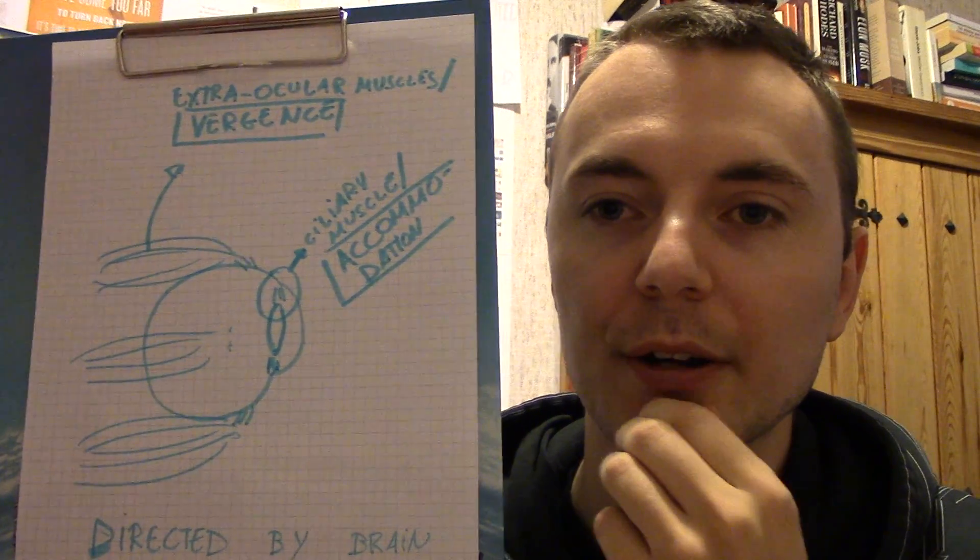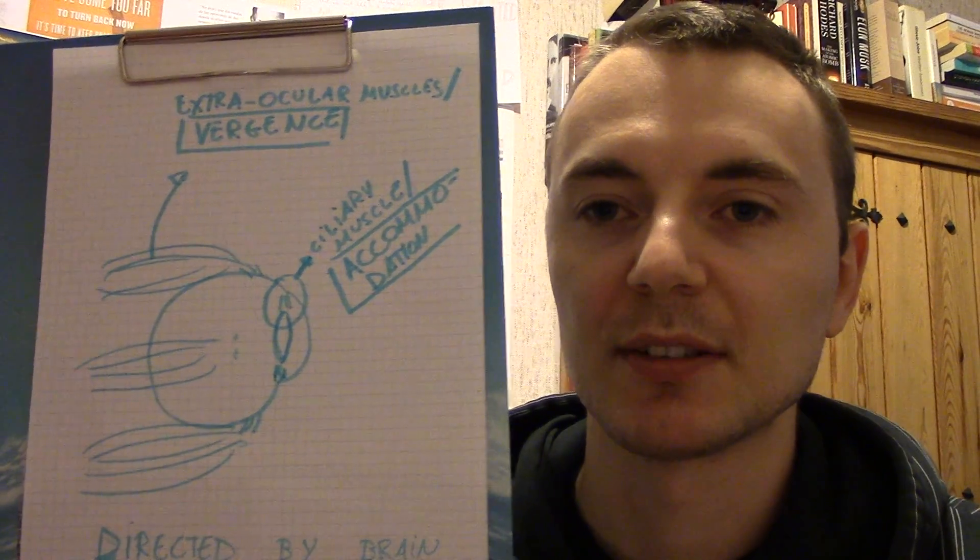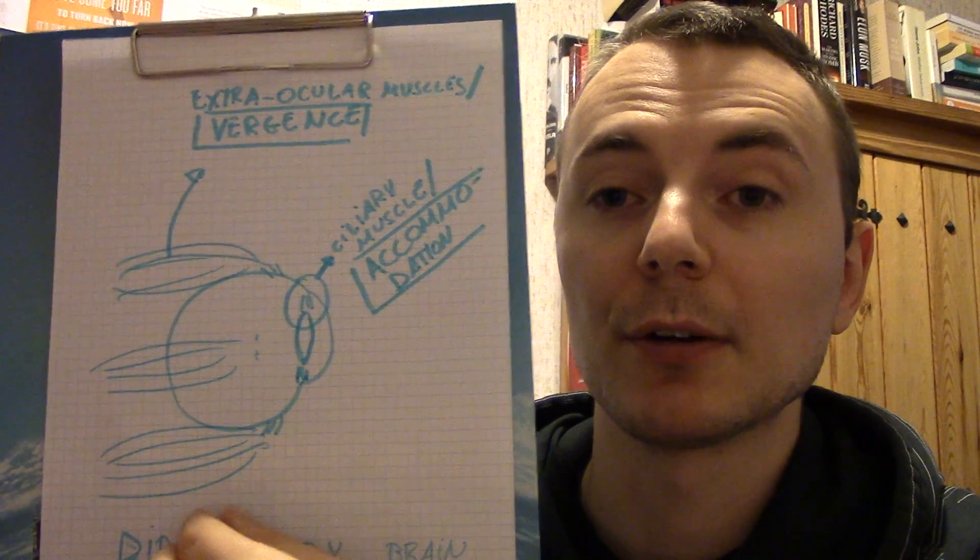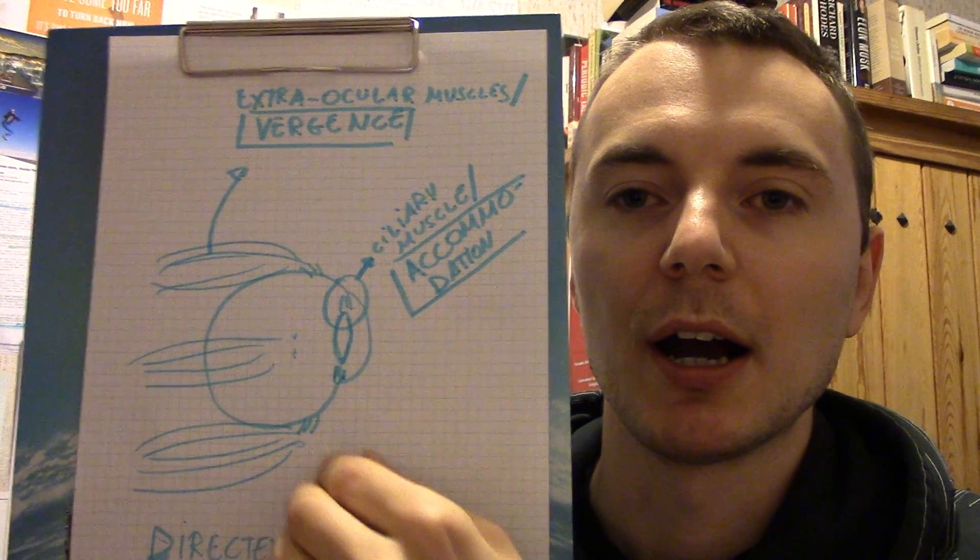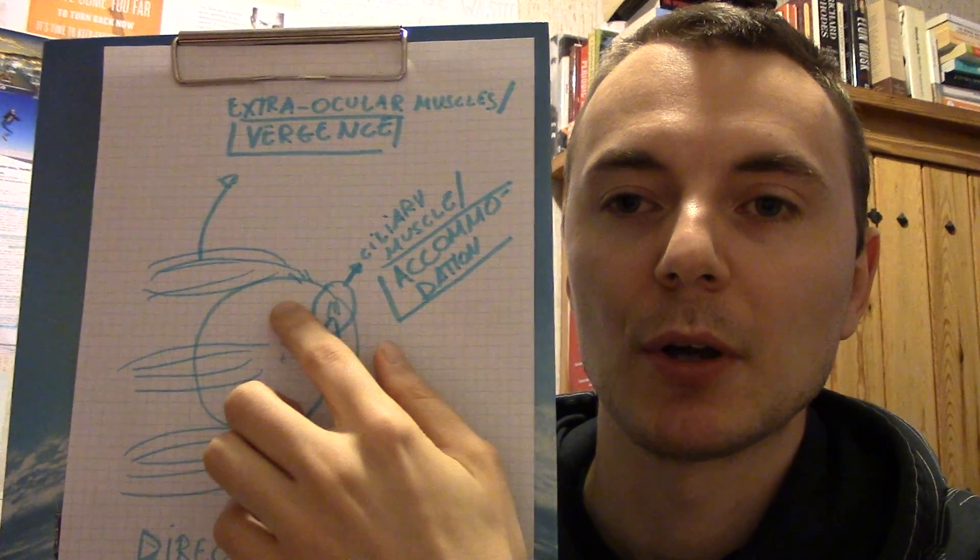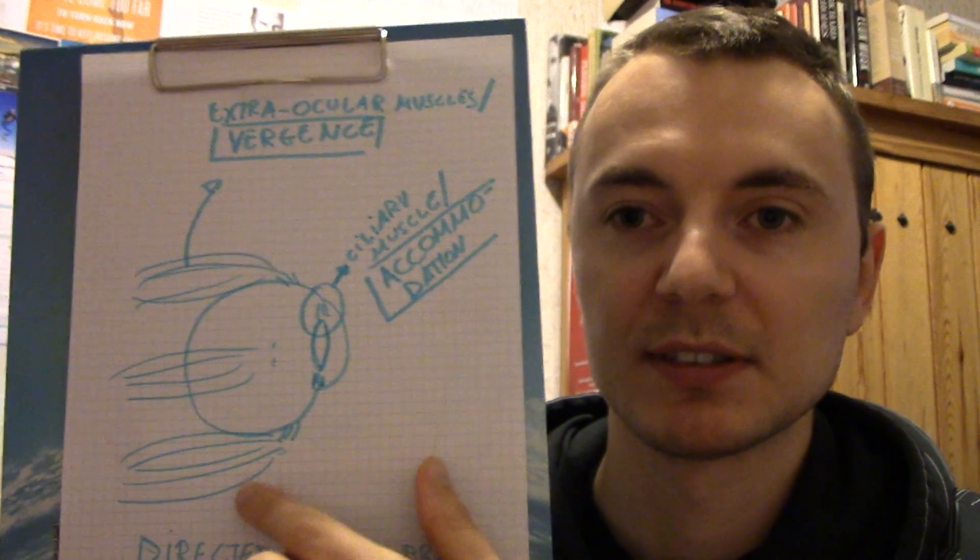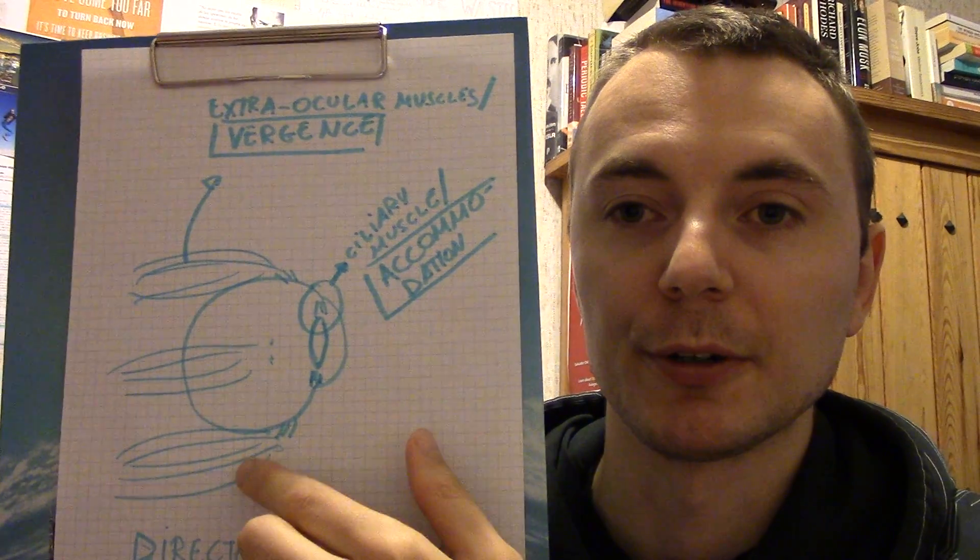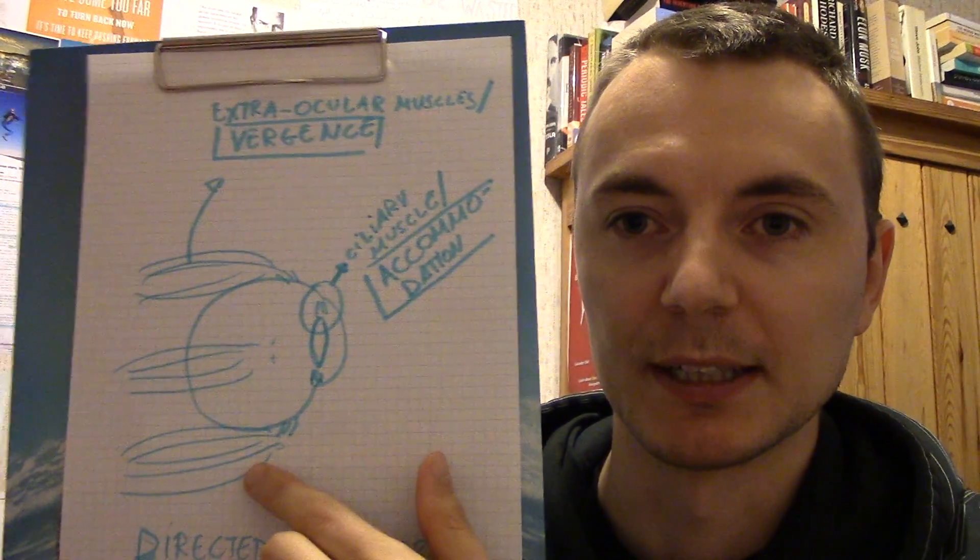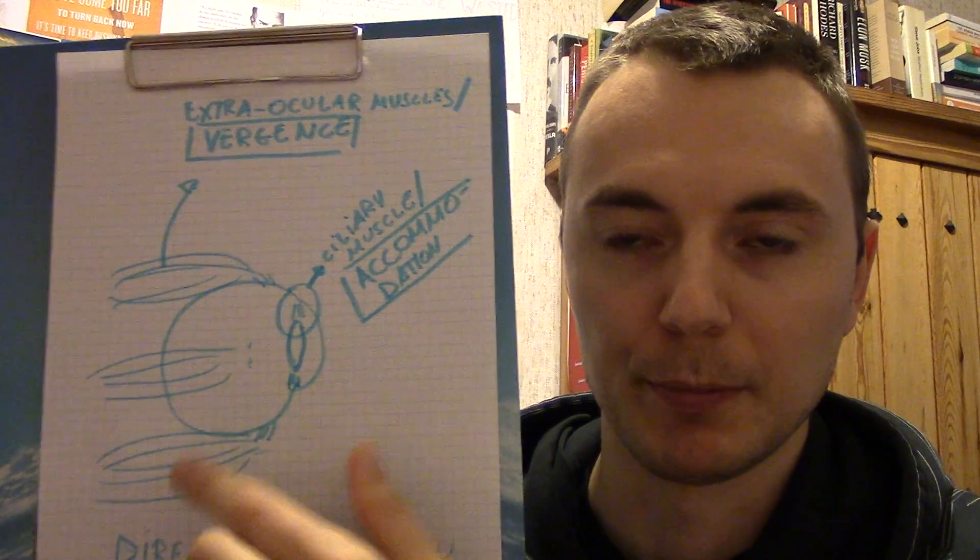And they are controlled by the brain and the message is sent through the cranial nerves. Three of the 12 cranial nerves are directly involved in ocular movement, so not just seeing but just ocular movement. So four cranial nerves are involved in ocular movements, so it's a big deal. It's a big deal not only in movement but also proprioception, which is another discussion.